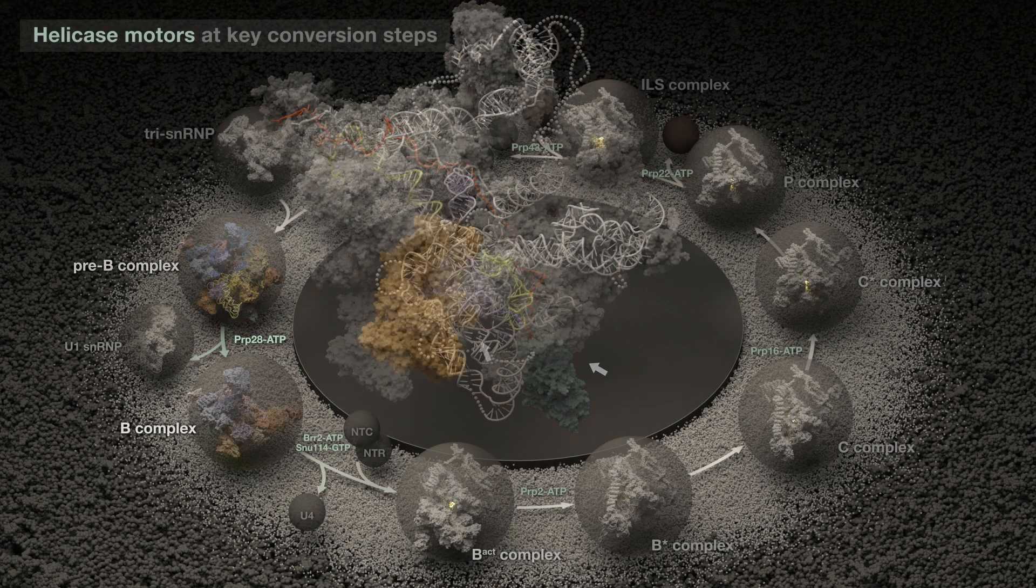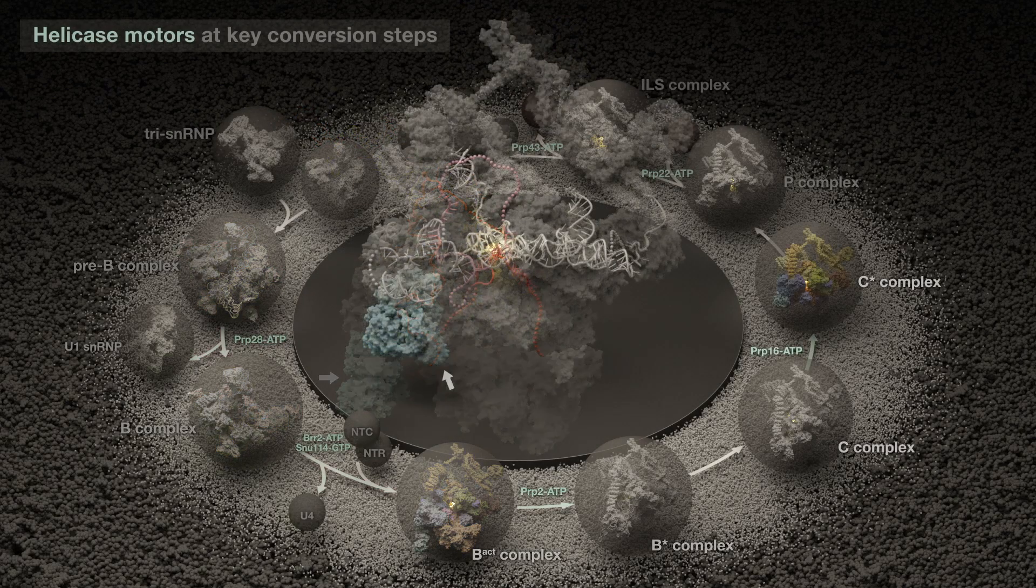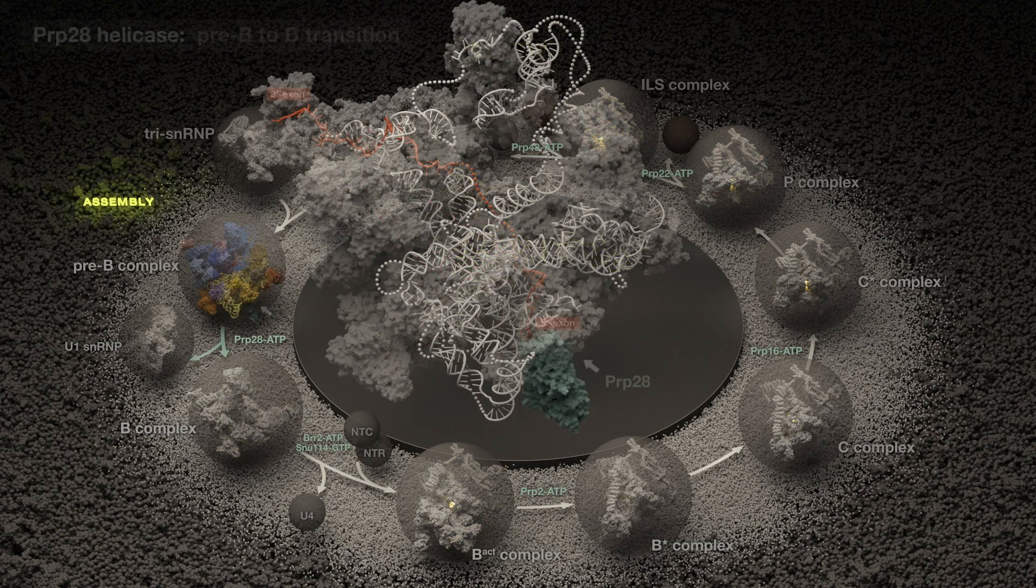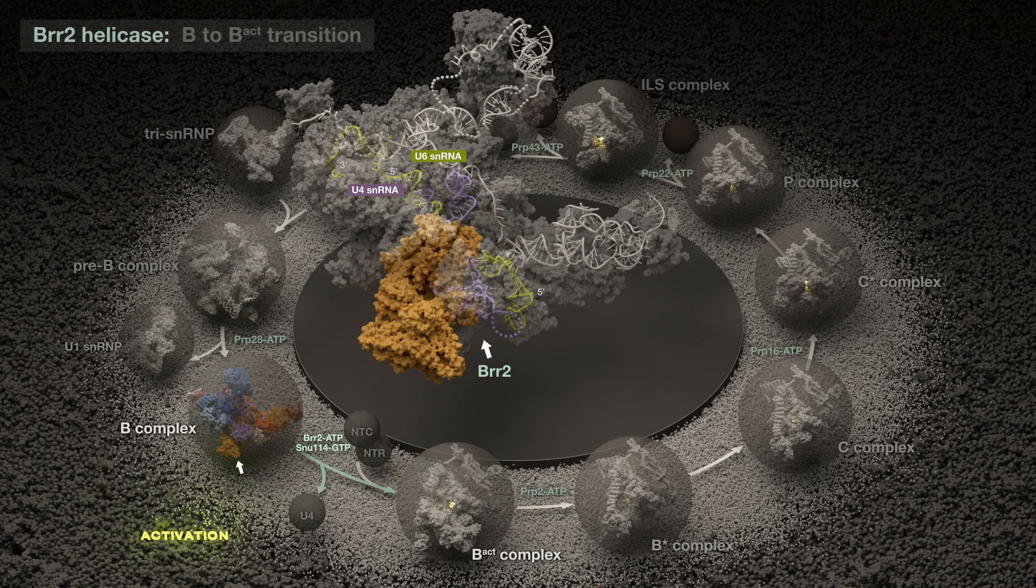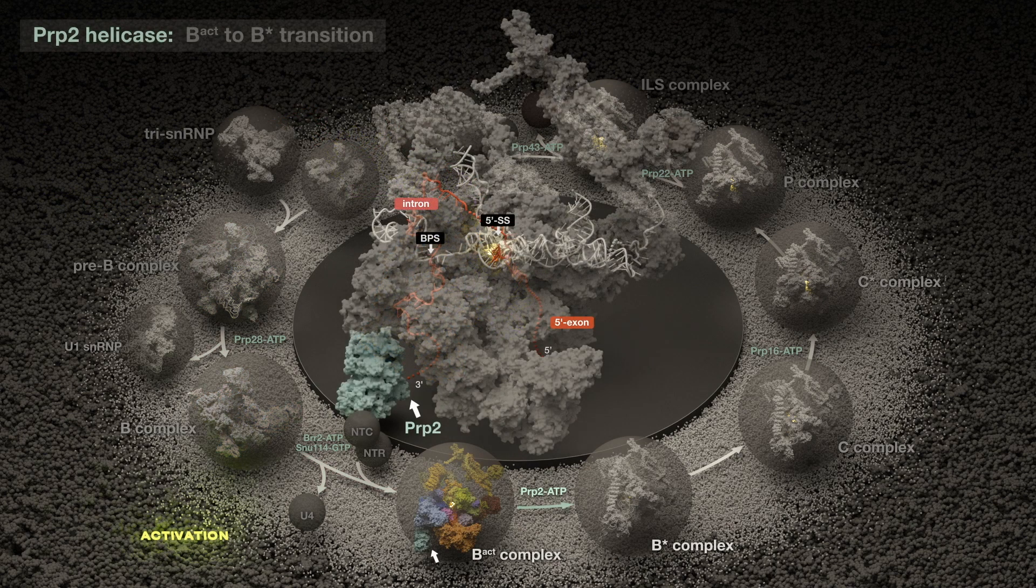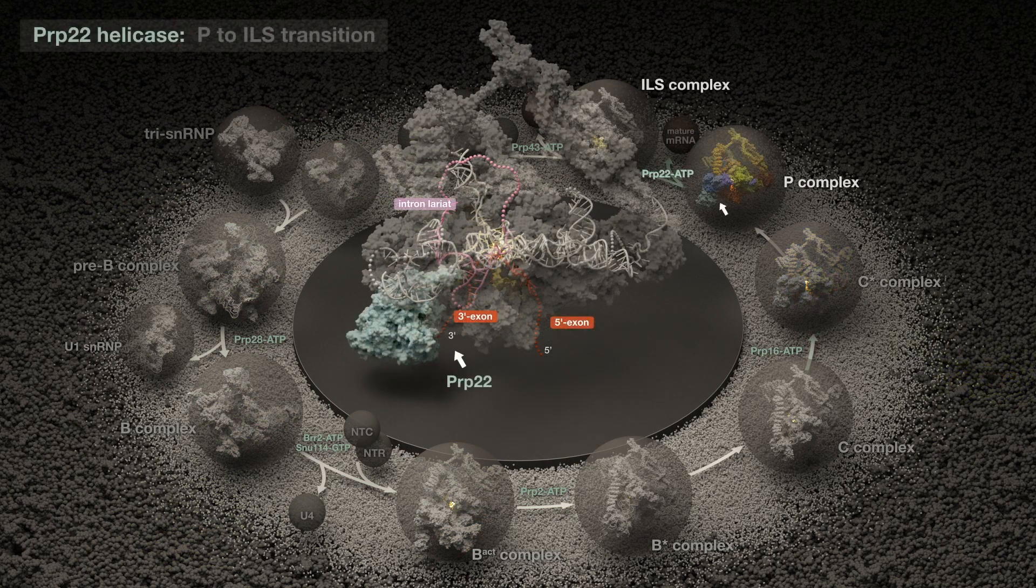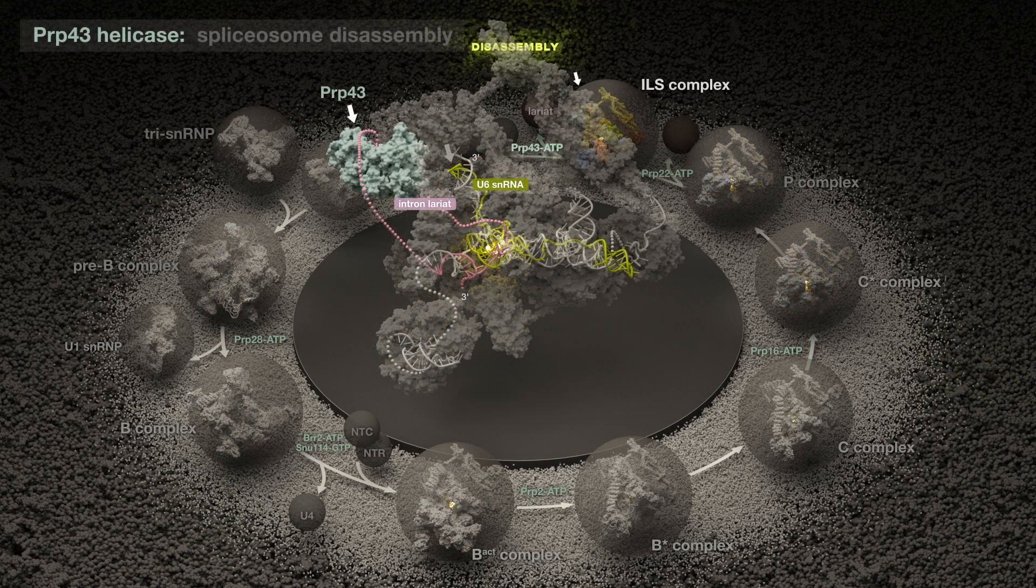Helicase motors pull and unwind RNA at key conversion steps in the splicing cycle. They power spliceosome assembly steps, commitment to splicing and activation, progression through splicing reactions, and finally disassembly of the spliceosome for the next cycle.